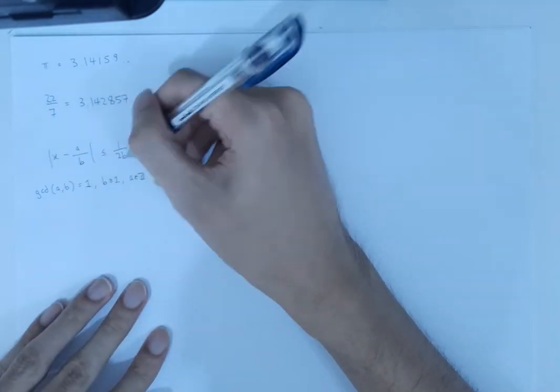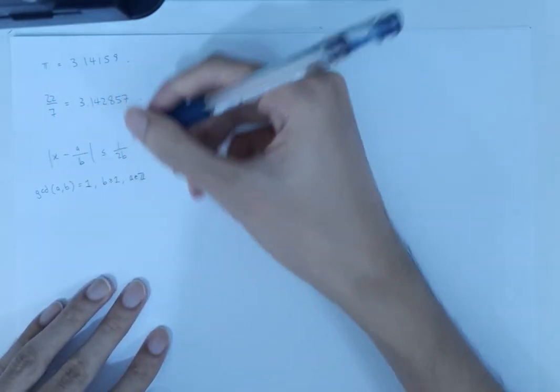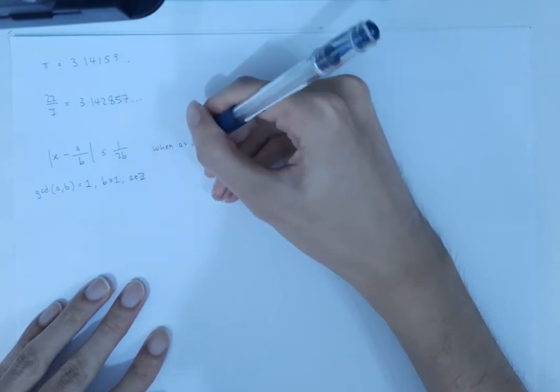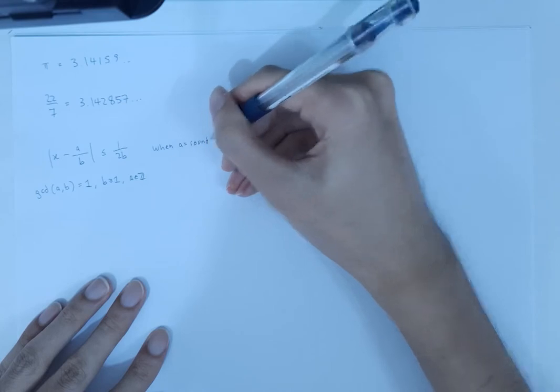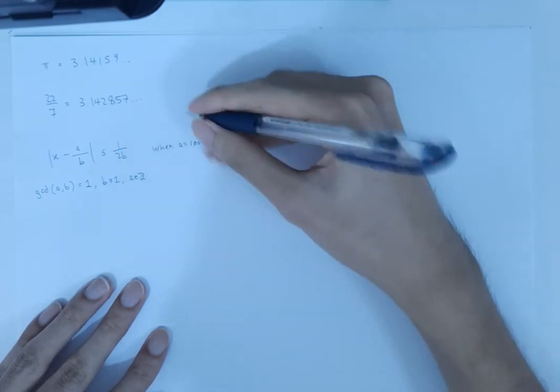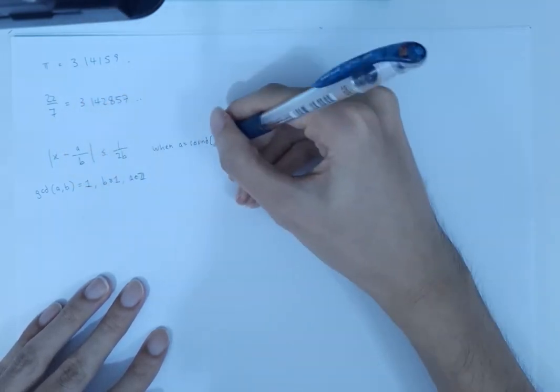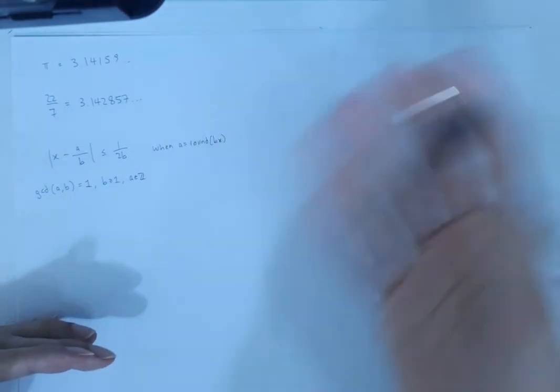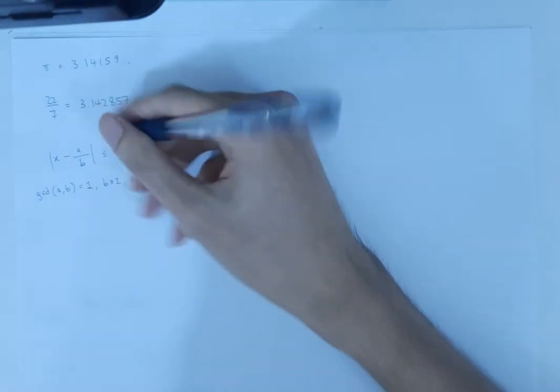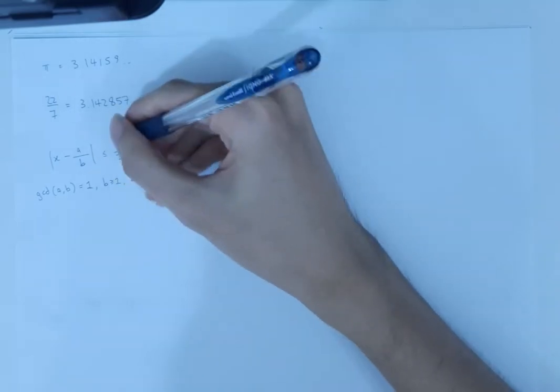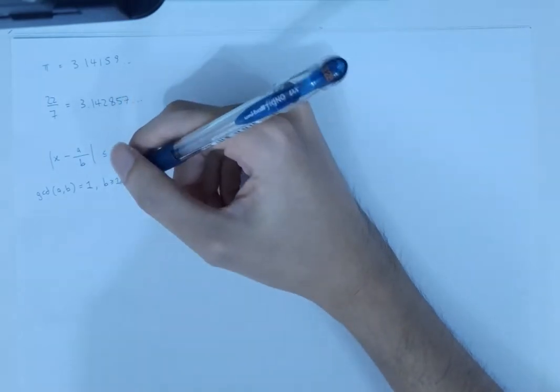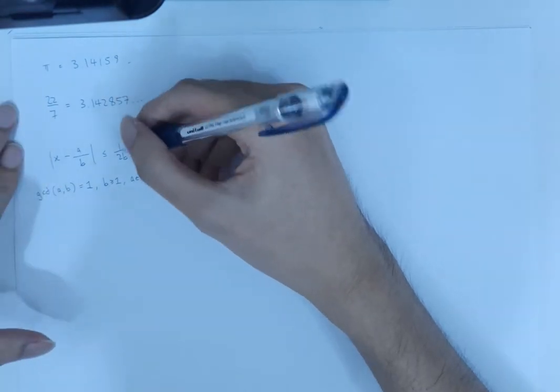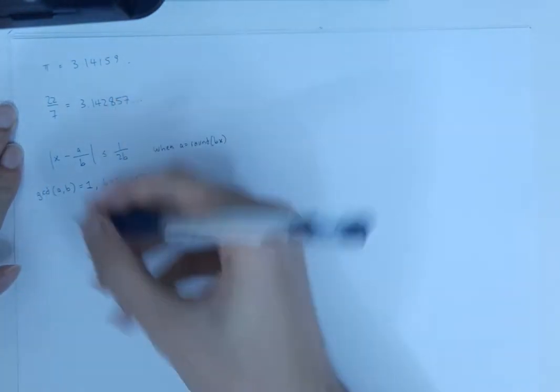And the way we choose a to get this error bound is to take a to be the closest possible value. So we round bx to the nearest integer, and if it's midway between two integers, then it doesn't matter whether we round up or round down, and either way we'll get exactly an error of 1 over 2b. So what we mean by exceptionally good rational approximation is that the error is much less than 1 over 2b.